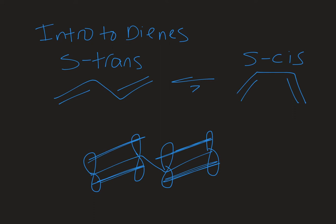Welcome to Chemistry with Caroline. In this video we're going to look at an introduction to dienes. So di means two and ene tells me that I have a double bond. So a diene is going to have two double bonds in it.